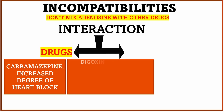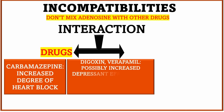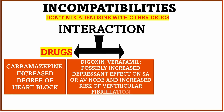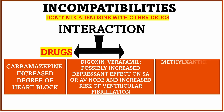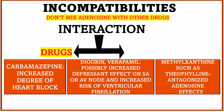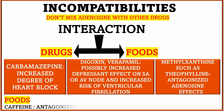If given along with digoxin and verapamil, it will depress the SA and AV node, leading to ventricular fibrillation. Lastly, if this drug is given along with methylxanthines such as theophylline, it will antagonize the effect of Adenosine. Regarding food interaction, intake of caffeine will also antagonize the action of Adenosine.